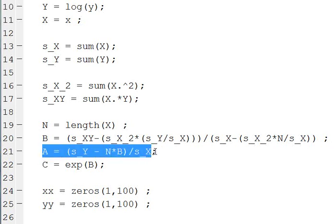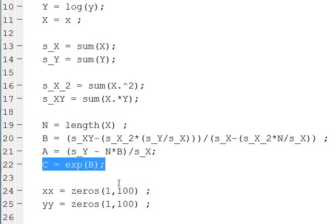We're going to use this variable A as the sum of Y minus N times this linearization equation that we just used, B, divided by the sum of X. And then we can determine the C coefficient as the exponential of B.